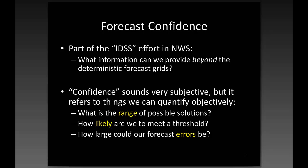So what is forecast confidence? It's part of doing good DSS. What information can we provide beyond just the deterministic forecast grids? Confidence sounds very subjective, but it refers to things we can quantify objectively: what is a range of possible solutions, how likely are we to meet a threshold, and maybe how large could our forecast errors be? These are all things that, given good interpretation of the model information, we can eventually communicate better to the emergency managers, public, or whatever our customers might be.